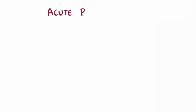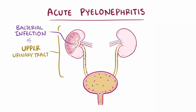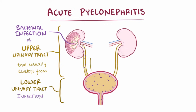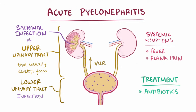As a quick recap, acute pyelonephritis is typically a bacterial infection of the upper urinary tract, which usually develops from a lower urinary tract infection, especially in individuals with vesicoureteral reflux. The infection causes systemic symptoms like fevers and flank pain at the costovertebral angle and is treated with antibiotics.